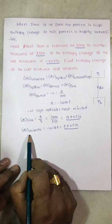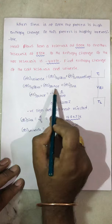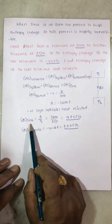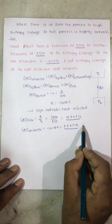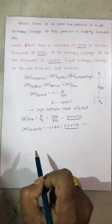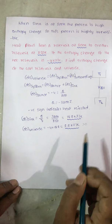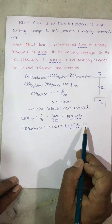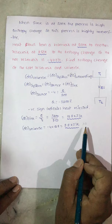DS of universe equals DS of source plus DS of sink: minus 4 plus 12.8 equals 8.8 kJ per Kelvin. It is greater than zero, so the process is irreversible. The entropy of the universe can never decrease — it is always increasing. Since the entropy change is not equal to zero, this is an irreversible process. Entropy change equal to zero would mean a reversible process.